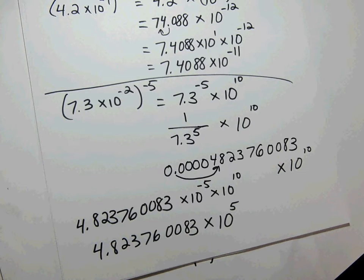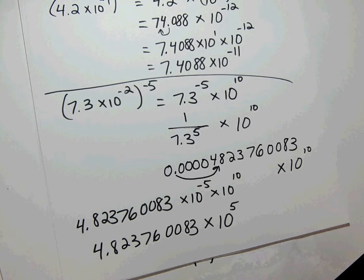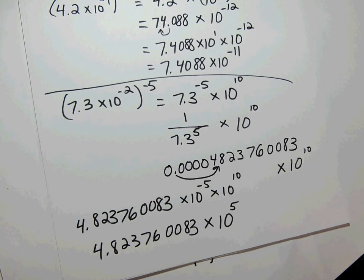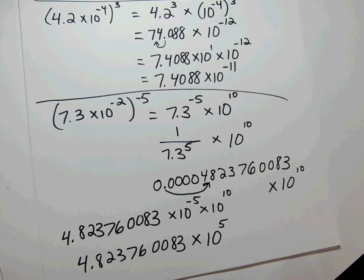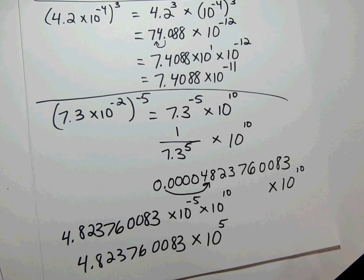That concludes the scientific notation calculations. Engineering notation at the end of the chapter can be skipped. This wraps up Chapter 5 — our next exam covers Chapters 4 and 5. Between in-class lectures and these six videos, that's all the material needed. My next video will be a review with practice problems to prepare for the exam.